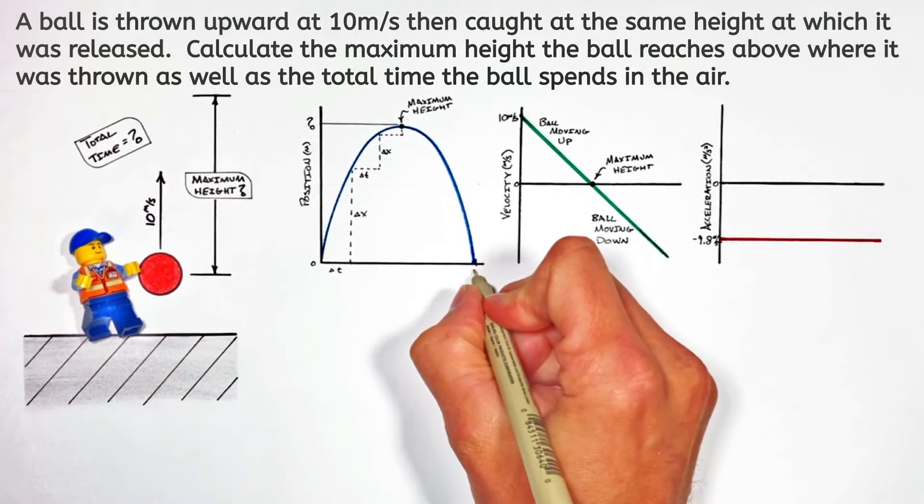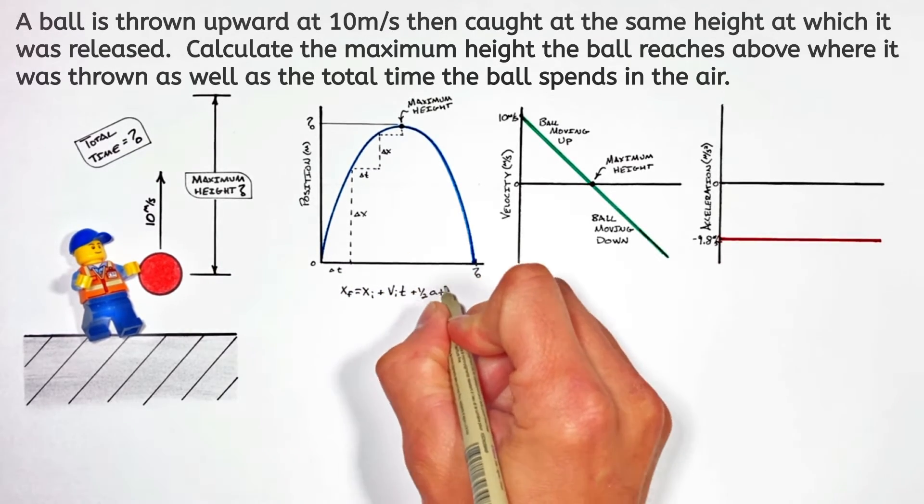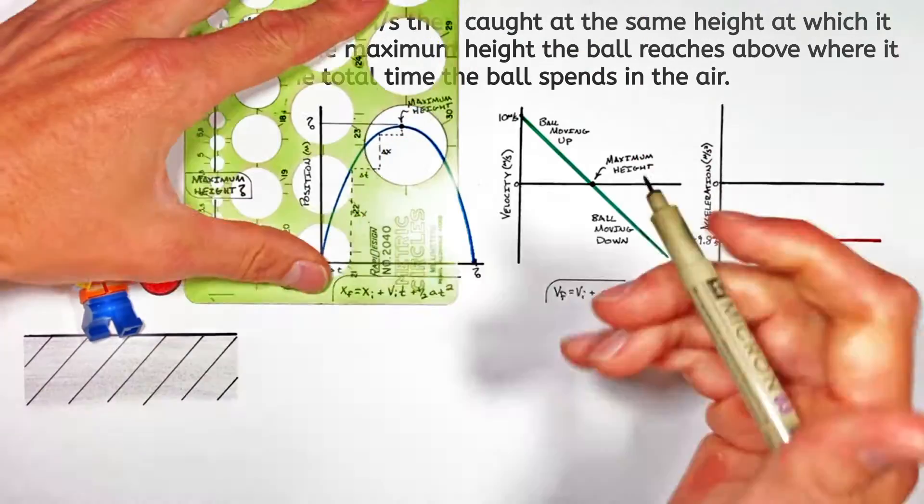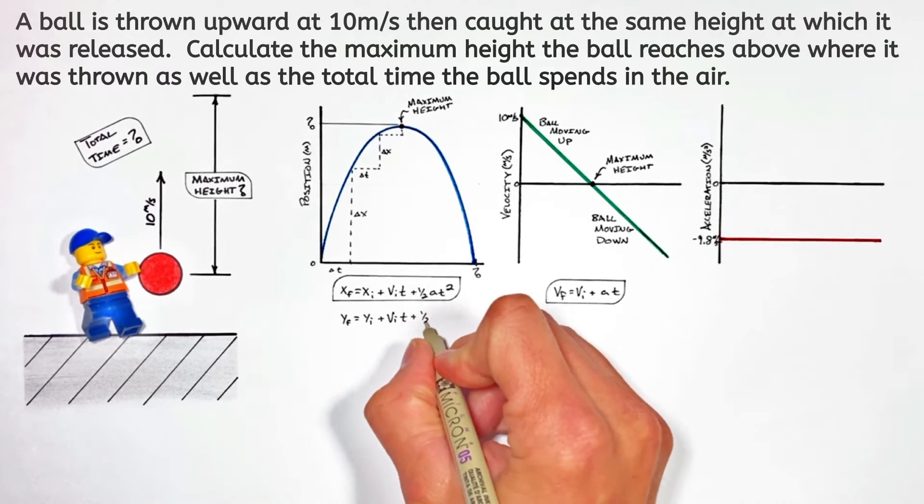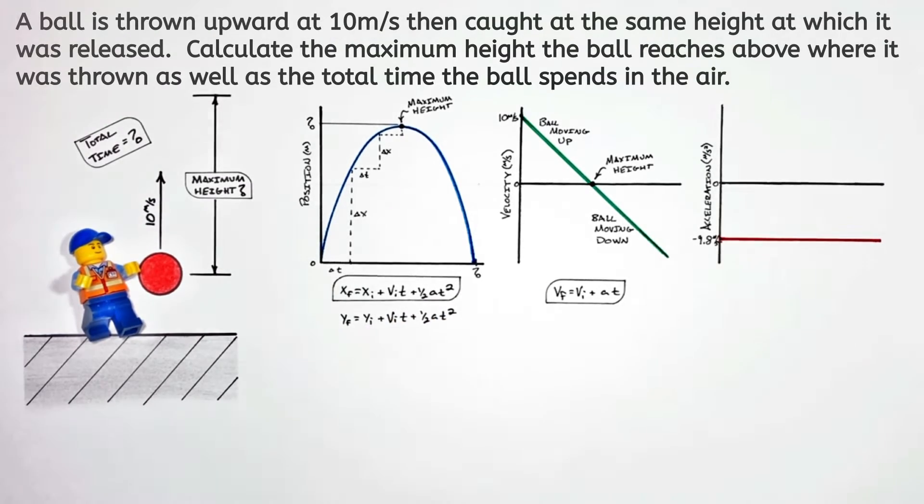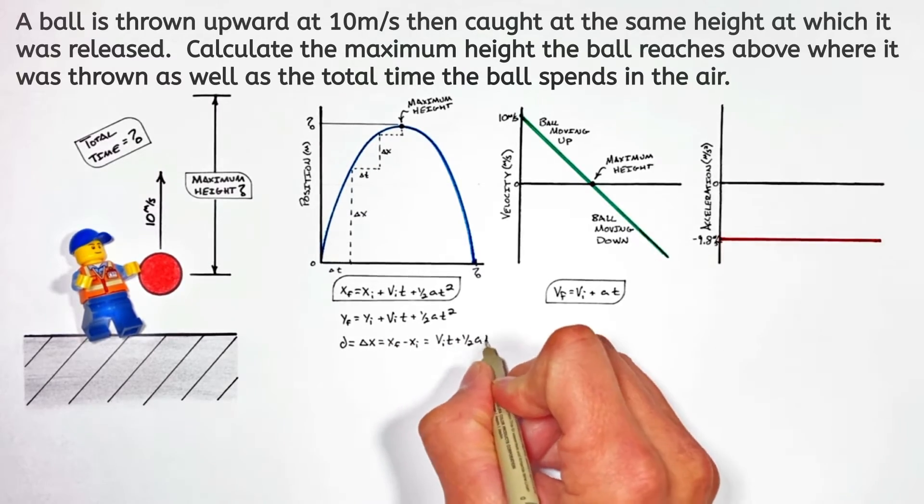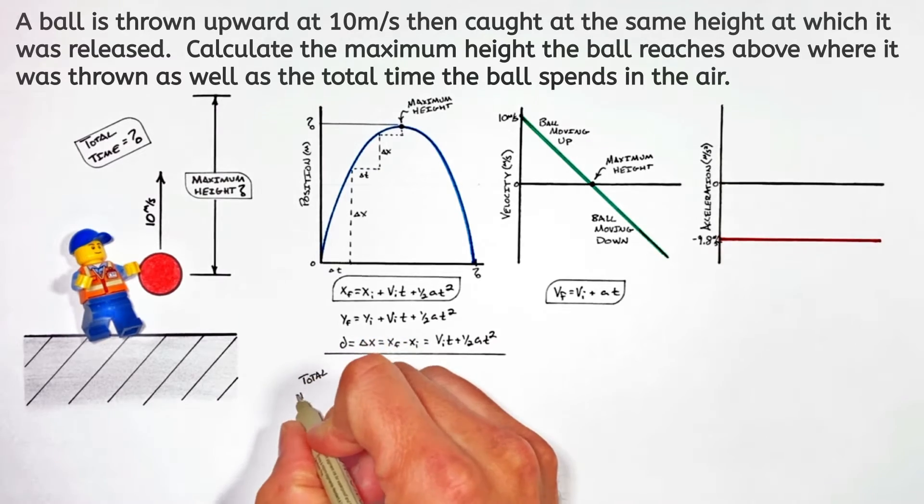It's important to recognize that two of the kinematic equations go with the position and velocity graphs which we've already written out. Sometimes you'll see this position equation written with Y's rather than X's to show it's in the Y axis, or other times you'll just see it written out as a displacement equation, but realize all three of these equations are showing us the same thing.